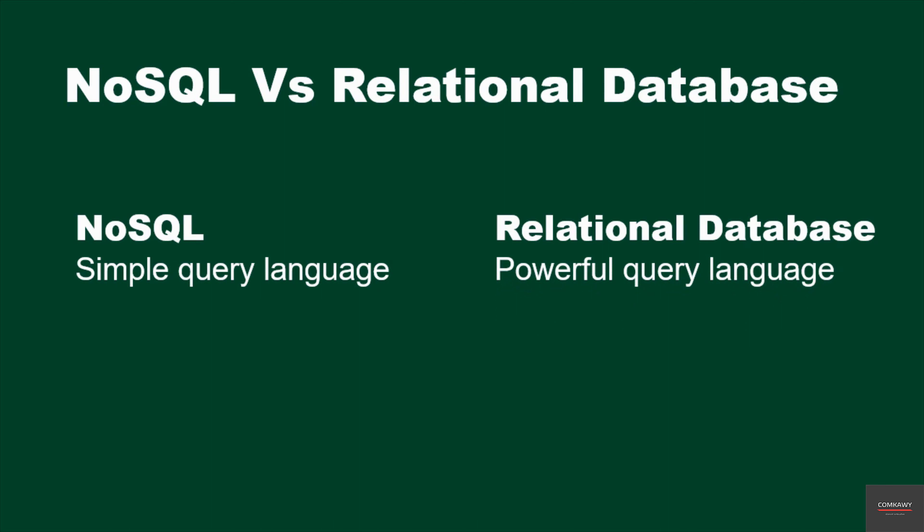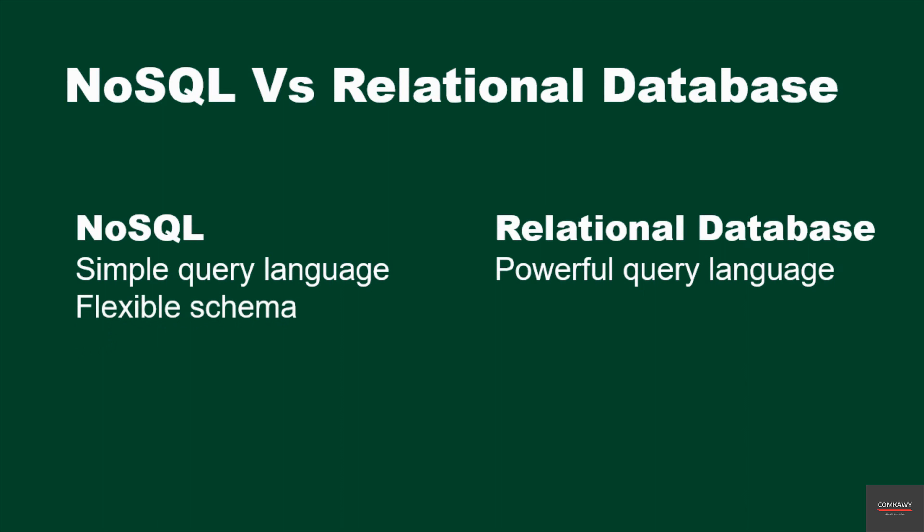The schema in a NoSQL database is flexible, while a relational database schema is fixed.